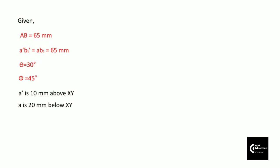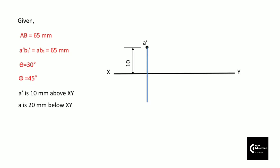First we will draw the XY line, and then at a distance of 10mm we can project point A', that is the front view of point A. Once you get A', you can draw the projector of point A. This is the projector of point A where the top view of the point will lie on the same line. We have the distance of the top view point as 20mm below the XY line, so we will measure 20mm and mark point A.